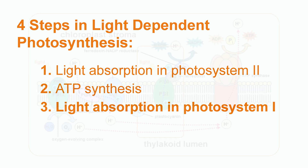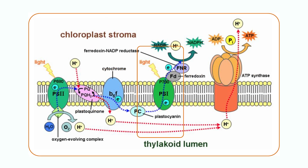The electron now arrives at photosystem 1. When light hits the photosystem, the electron is excited again and the high-energy electron is transferred to an acceptor molecule.